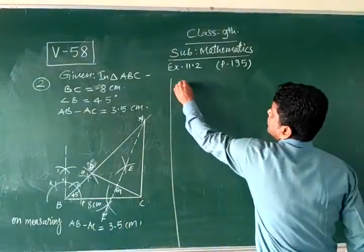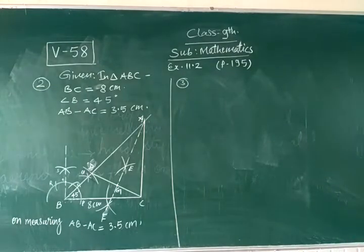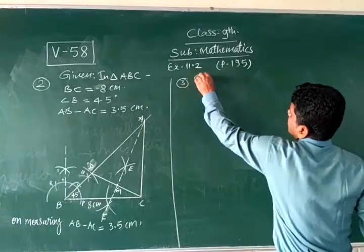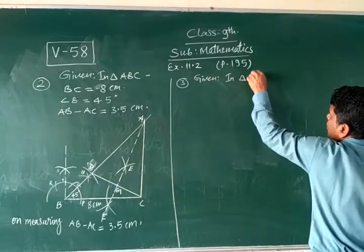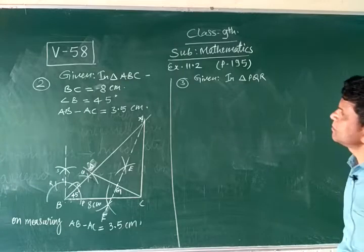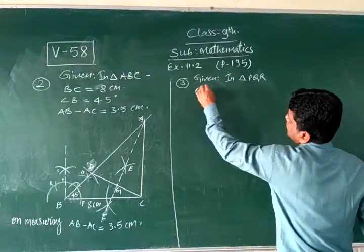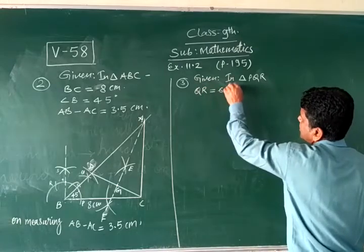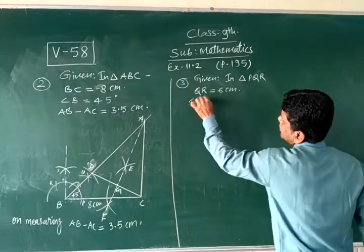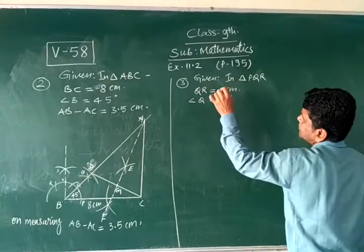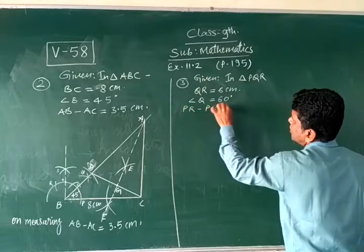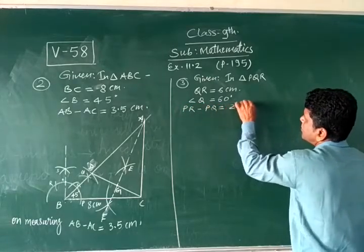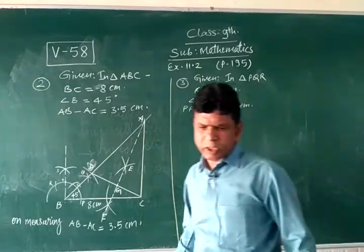Question number 3. Construct a triangle PQR in which QR is equal to 6 cm, angle Q is 60 degrees, and PR minus PQ is equal to 2 cm. Got it? Yes.